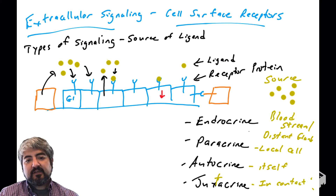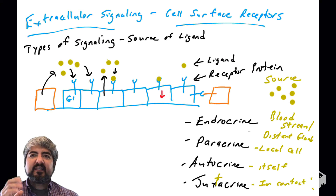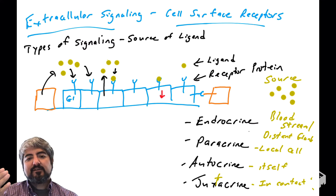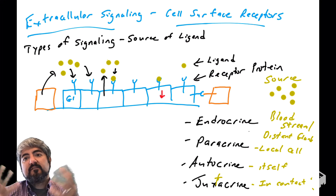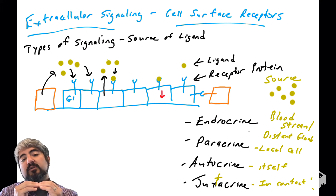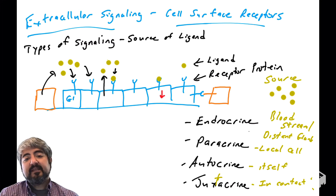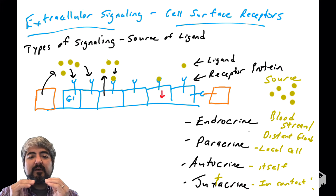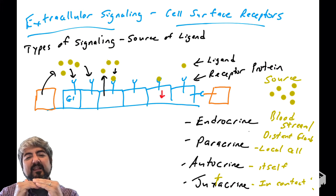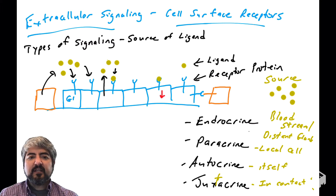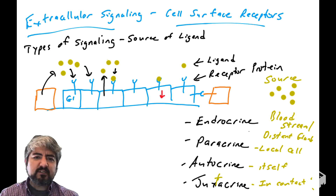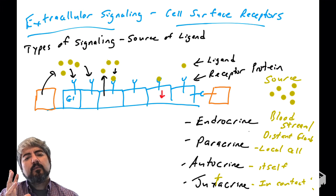The last type, juxtacrine signaling, involves — instead of soluble molecules as in endocrine, paracrine, or autocrine — cells actually touching each other. It involves protein-protein interactions through proteins that are embedded in the plasma membranes of both cells. So cells communicate with each other via cell surface protein-protein interactions; that is juxtacrine signaling, and it typically requires close contact between two cells. When we talk about cancer biology, we talk a lot about paracrine and autocrine signaling.